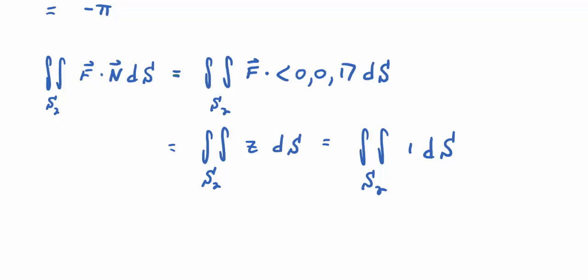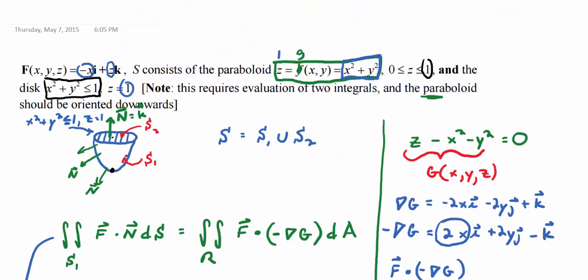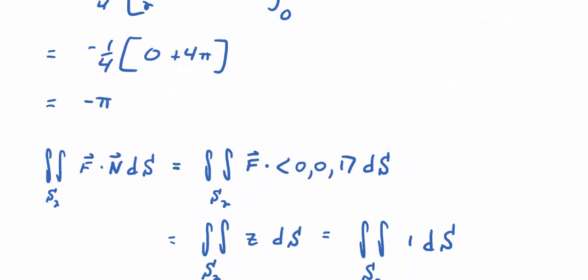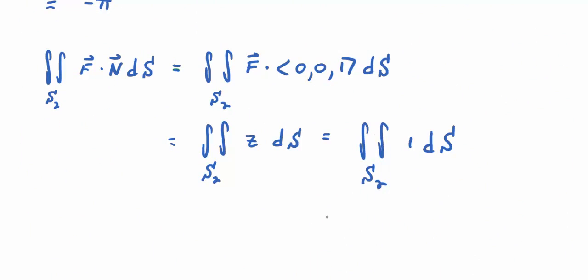This integral reduces to a surface area integral. When the integrand is 1, you're just finding the surface area. But it's just a disk of radius 1. What's the area enclosed by a circle of radius 1? Pi r squared, where r is 1. So it's pi times 1 squared, or just pi.